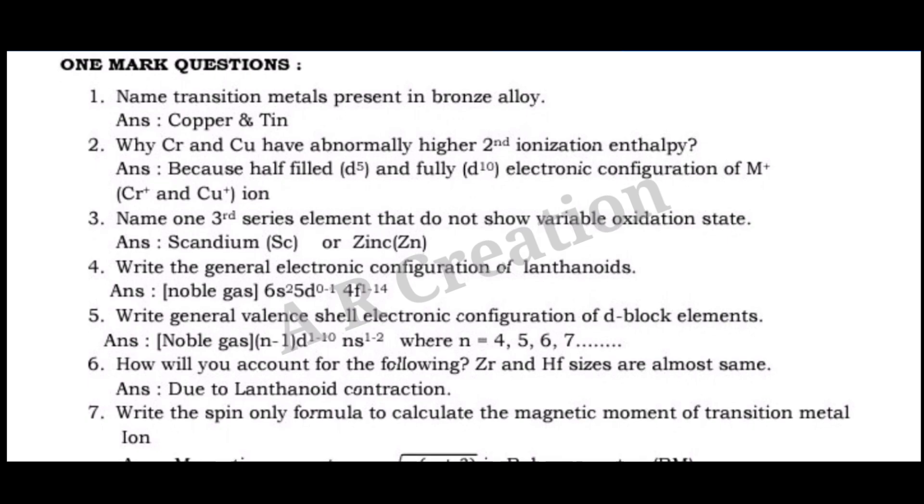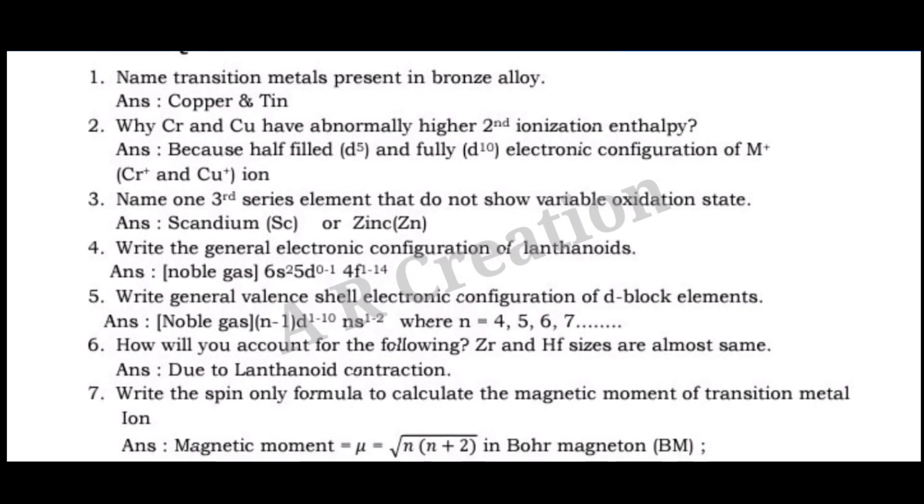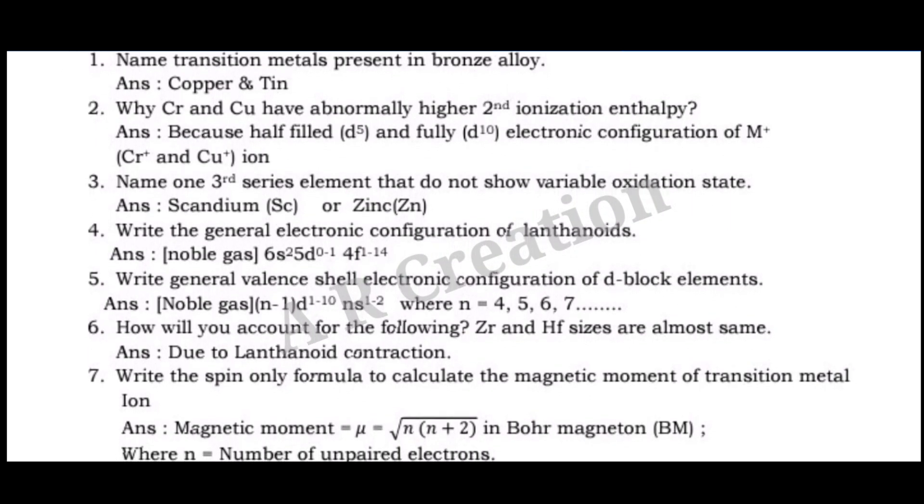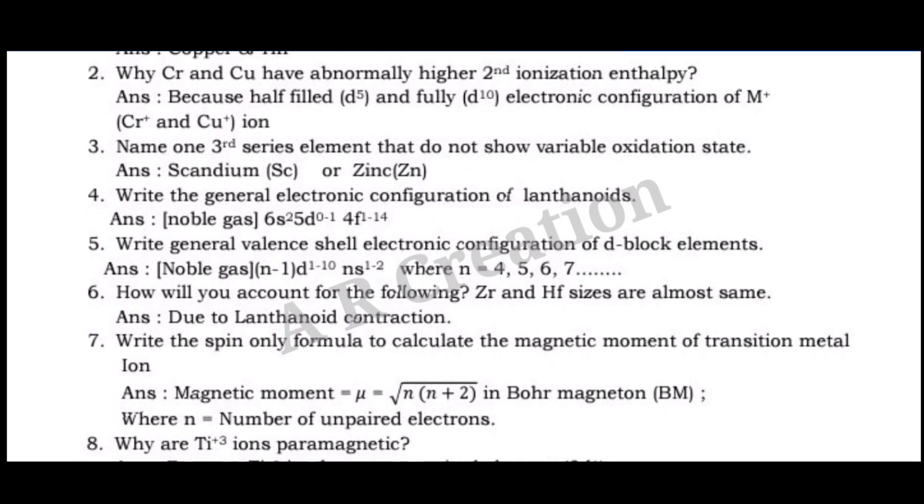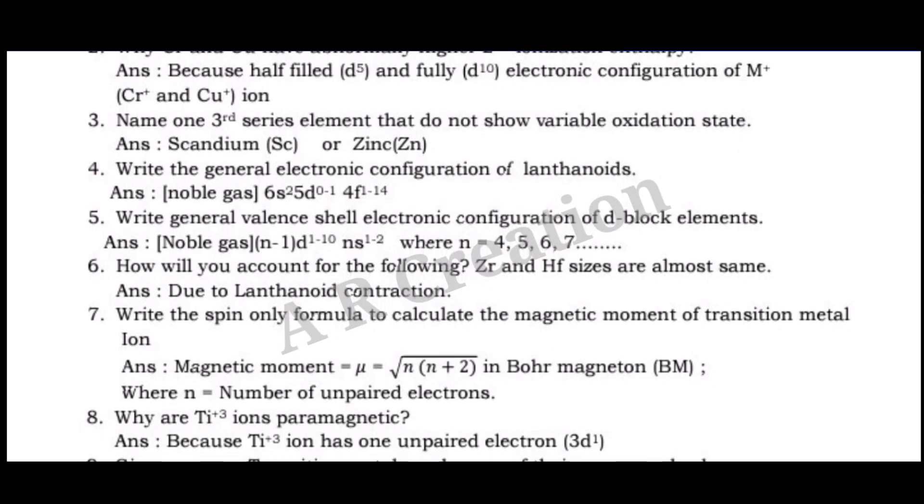Question 5. Write general valence shell electronic configuration of d-block elements. Answer: [noble gas] (n-1)d1-10 ns1-2 where n = 4, 5, 6, 7.